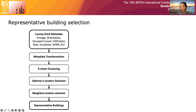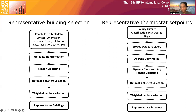Using the silhouette index, we determine the appropriate number of building clusters. Given the distribution of buildings across clusters for each neighborhood, a desired number of buildings is randomly sampled using a weighted approach. In a similar fashion, we identify representative set-point schedules for selected buildings from the Ecobee 2020 dataset. We first designate each location as either heating or cooling dominant based on degree days and determine the average daily set-point schedule for each building in the region. We eventually apply dynamic time-warping k-shape clustering on the average daily set-point schedules.